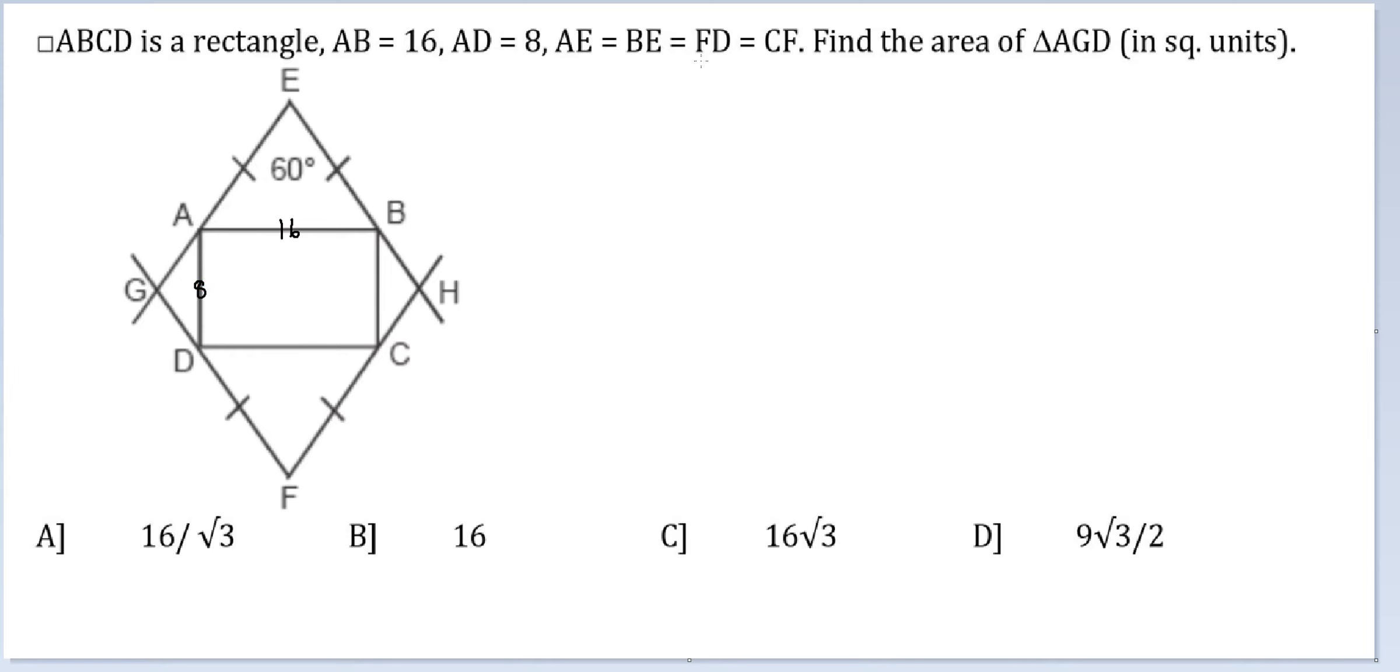AE is equal to BE is equal to FD is equal to CF, already marked. Find the area of triangle AGD. This is the triangle whose area we need to find.